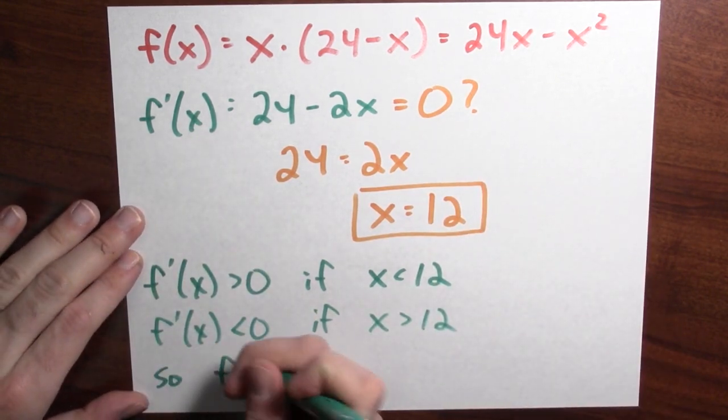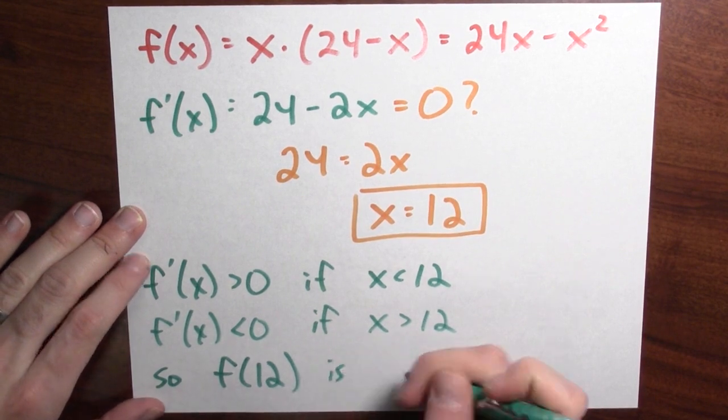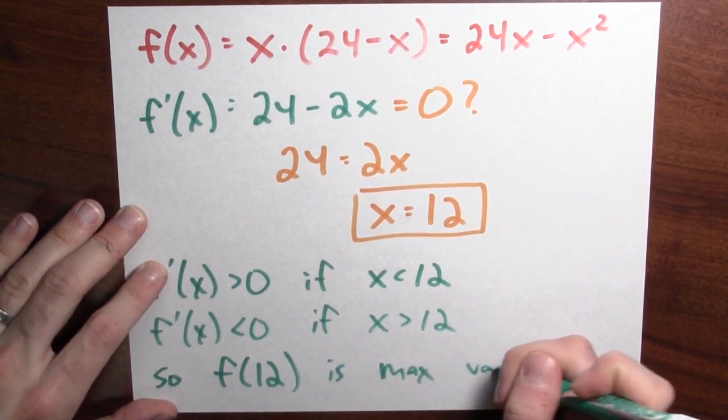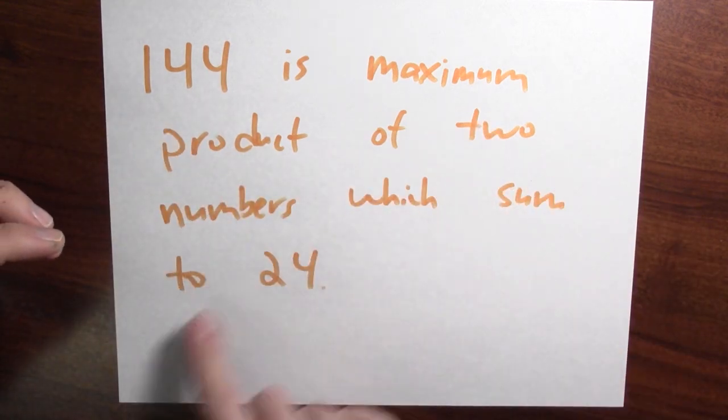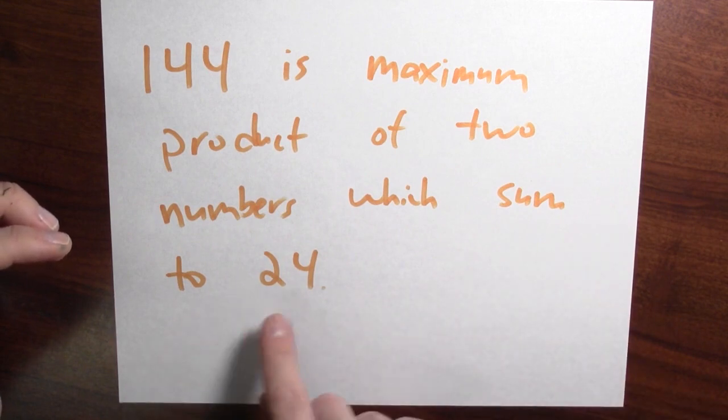So I'll write f of 12 is my maximum value. So what do we conclude? So here's our conclusion. 144 is the maximum product of two numbers which sum to 24.